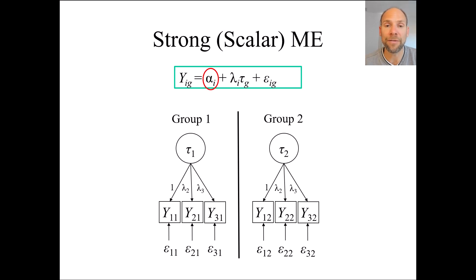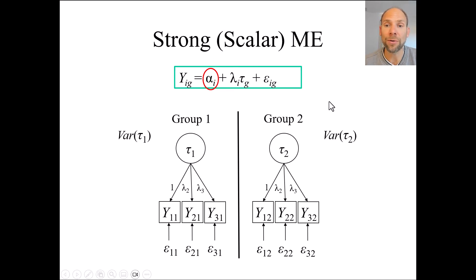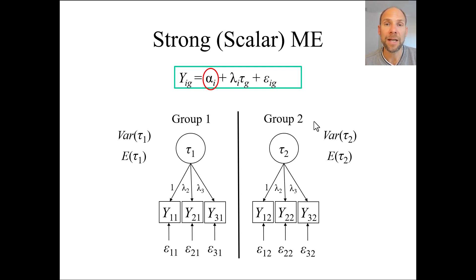Strong or scalar measurement equivalence is the case when not just the loadings but also the intercepts are group-invariant. The index g is dropped from α_i as well, meaning intercepts are no longer allowed to vary across groups. Under strong or scalar invariance we can then compare not only latent variances across groups but also latent means — which is often of key interest. For example, we might ask whether there is a significant difference in mean memory performance across genders, or differences in depression between an experimental and a placebo condition.